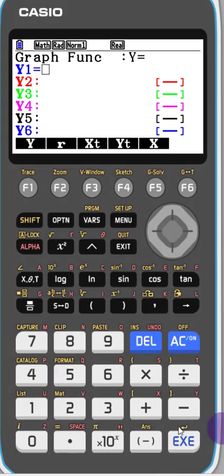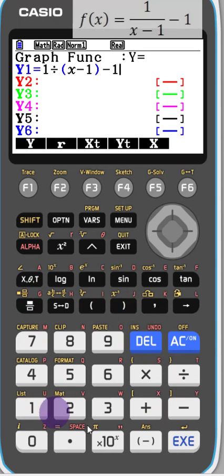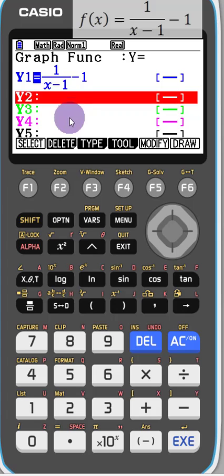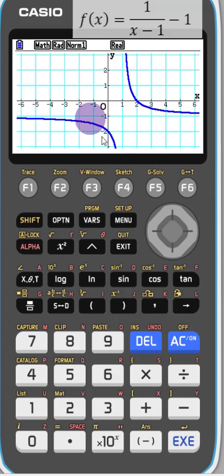Let's jump into menu 5 to get our graph function, input our function and press execute, and then we can press draw to get our graph drawn. What we can see is there is a gap here.